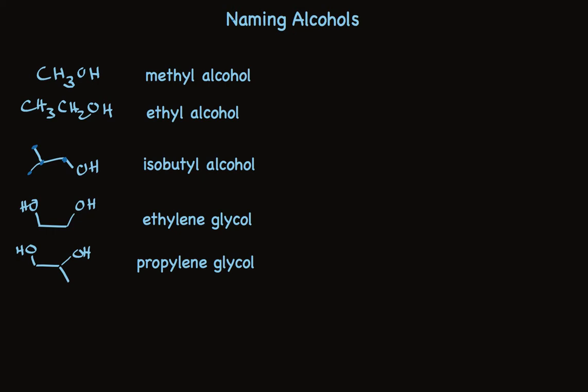Some common names give you some idea of what the alcohol is. Other common names give you no clue what the structure is — you simply have to memorize it. For example, this is a compound you've probably smelled, used widely in fragrances. The one word "geraniol" tells you everything about the structure: the stereochemistry, where the alcohol is, the branching methyl groups — all of it. But if you don't know the structure for geraniol, you'll have to look it up because the common name tells you nothing about the structure.